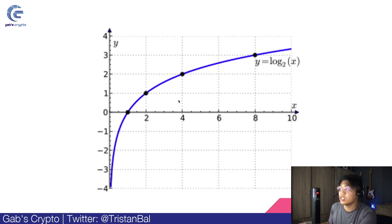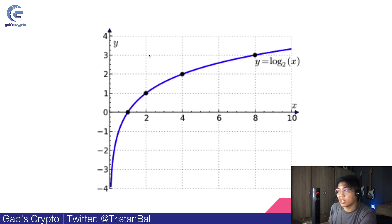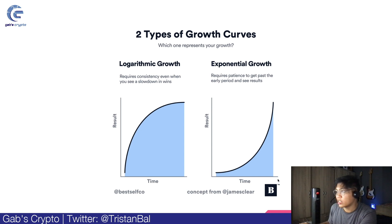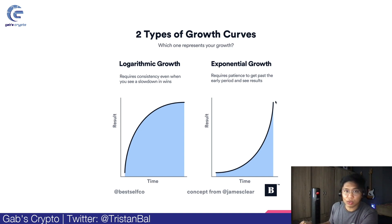We can also see that in a sample chart. Makikita mo na nagkakaroon tayo ng rapid increase and then diminishing increase as we go through this x-axis. Take note, ang characteristic din ng Logarithmic Growth Curve — ang Logarithmic Growth Curve is asymptotic to the x-axis. Nagka-asymptotic siya dyan, asymptotic yung move niya. As opposed to an Exponential Growth Curve na asymptotic siya sa y-axis. So it tells us na the Logarithmic Growth Curve is the inverse of the Exponential Growth Curve.